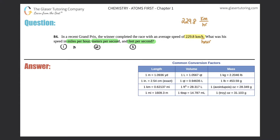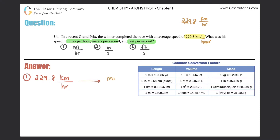So they want you to convert to miles per hour, meters per second, and feet per second. So I'll just put FT for feet per second. We'll just work from one to two to three. For number one, we want to convert 229.8 kilometers per hour into miles per hour.